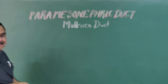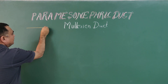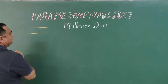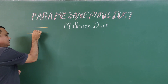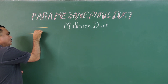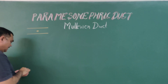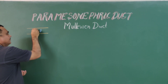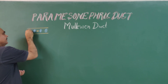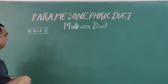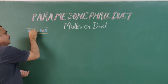In previous lectures you have seen ectodermal lining and endodermal lining. Between ectoderm and endoderm there is mesoderm. This mesoderm — this is the portion of the notochord here — divides into paraxial mesoderm. This is paraxial mesoderm, this is lateral plate mesoderm, and in between these two there is intermediate mesoderm.